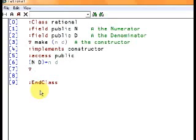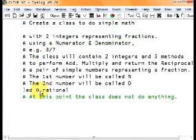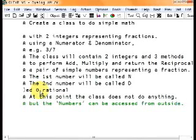Two fields, one constructor. So far. At this point, the class doesn't do anything, but the numbers can be accessed from outside. So let's have a look.